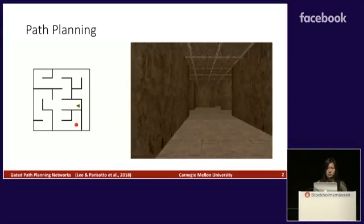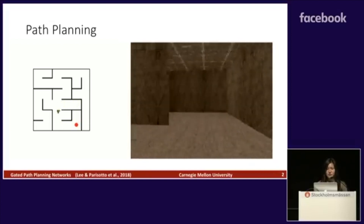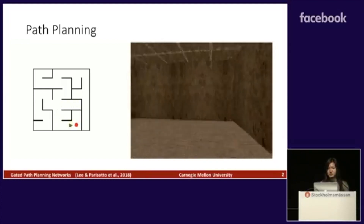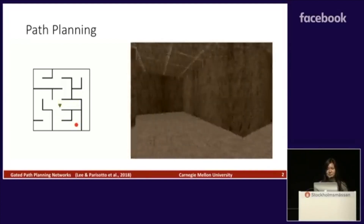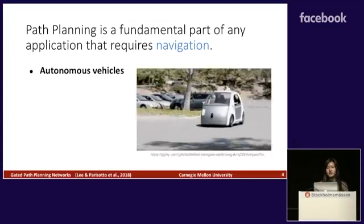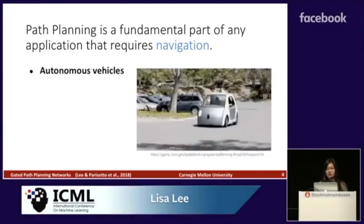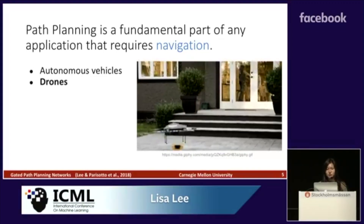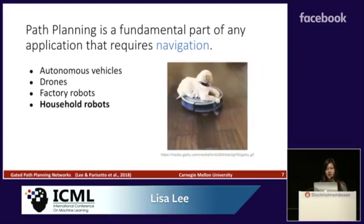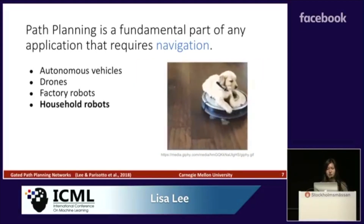Path planning is the problem of finding the shortest set of actions to reach a goal location from your starting state. Path planning is a fundamental part of any application that requires navigation. This includes autonomous vehicles, drones, factory robots, and household robots.